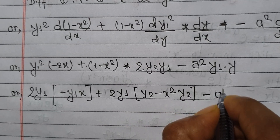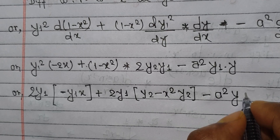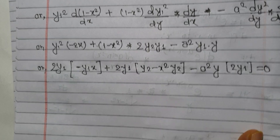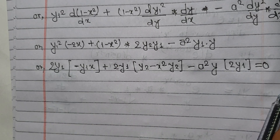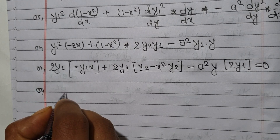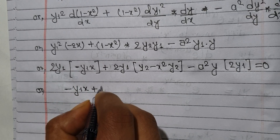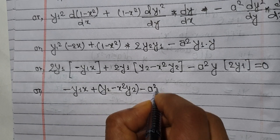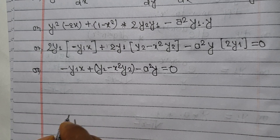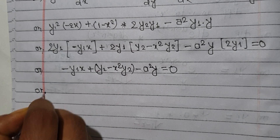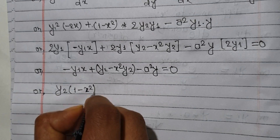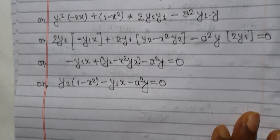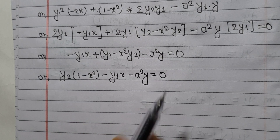Dividing through by 2y₁, we get (1 - x²)·y₂ minus x·y₁ minus a²·y equals 0. This is the required differential equation in the appropriate format. Now we have established (1 - x²)·y₂ minus x·y₁ minus a²·y equals 0, and we need to apply Leibniz's theorem to find the nth derivative.